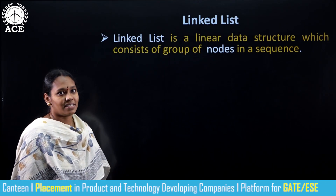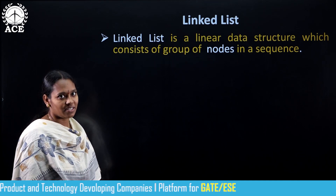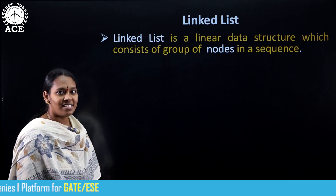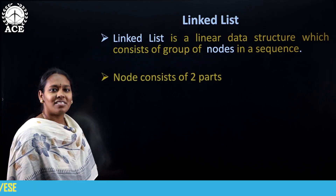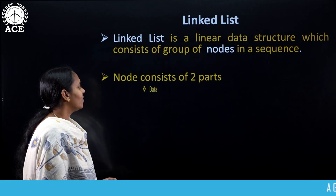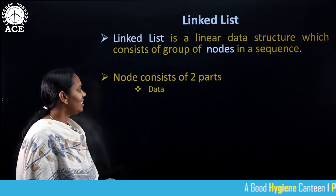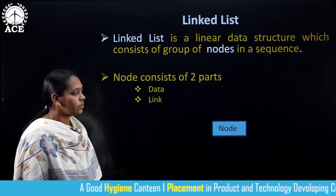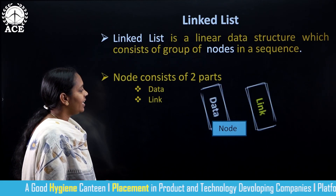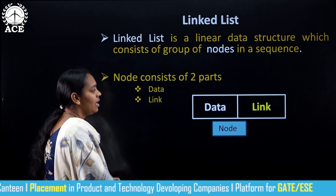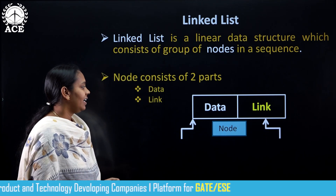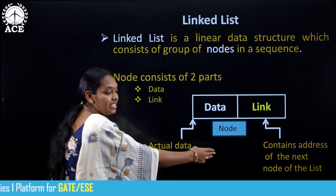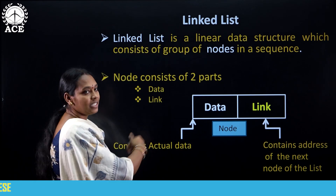So what is a linked list? Linked list is a linear data structure which consists of a collection of nodes. Simply, we can say that a linked list is a collection of nodes. Each node consists of two parts: the first part is a data part, and the other one is a link part. Here we have a pictorial representation of a node. Data part contains the actual data, and the link part contains the address of the next node. This is how we can represent a node.